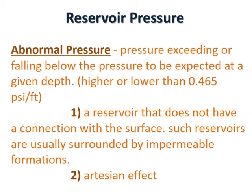Abnormal pressure can occur in one of two ways. First, a reservoir that does not have a connection to the surface; such reservoirs are usually surrounded by impermeable formations — a lenticular trap is such an example. Second, the Artesian effect, where the outcrop is at an elevation greater than the rig elevation.